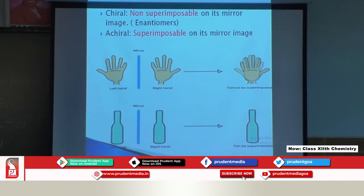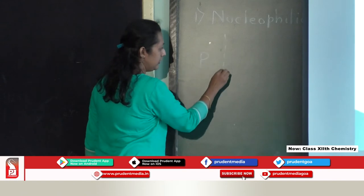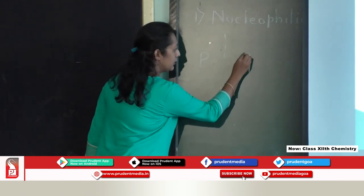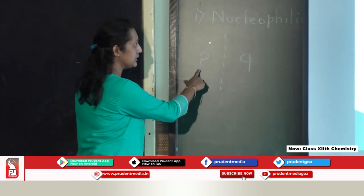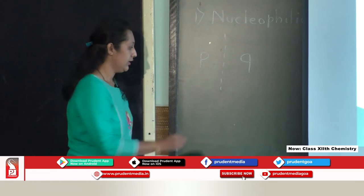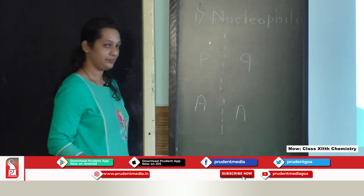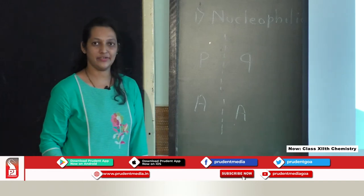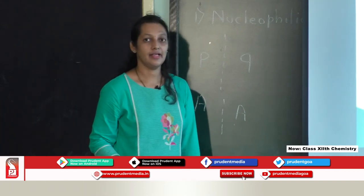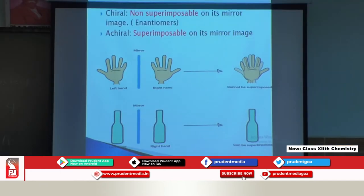For example, if I take the letter P and draw its mirror image, it will not coincide — that is known as chiral. If I take the letter A and draw its mirror image, it will coincide — that is known as achiral, and that property is known as achirality. Non-superimposable mirror images are also known as enantiomers.